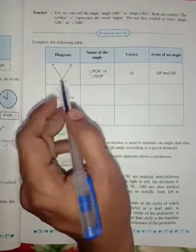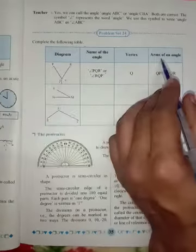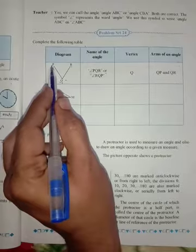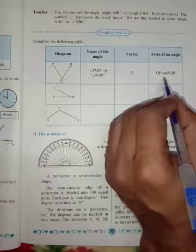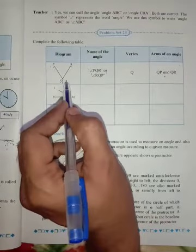And now write the arms of an angle. So QP and QR are the arms of this angle. An angle only has two sides.